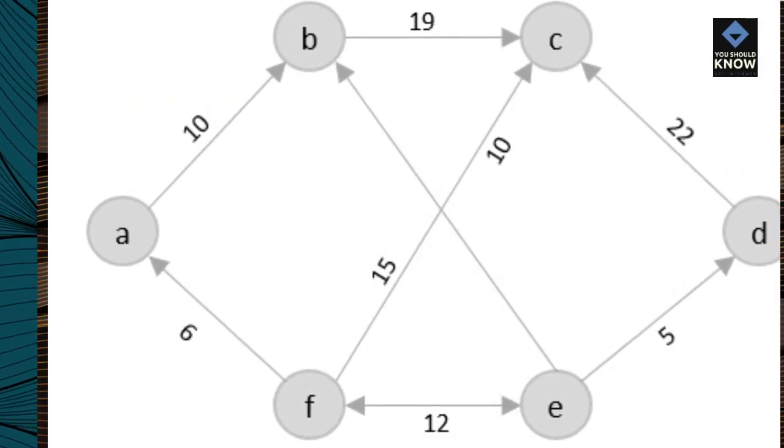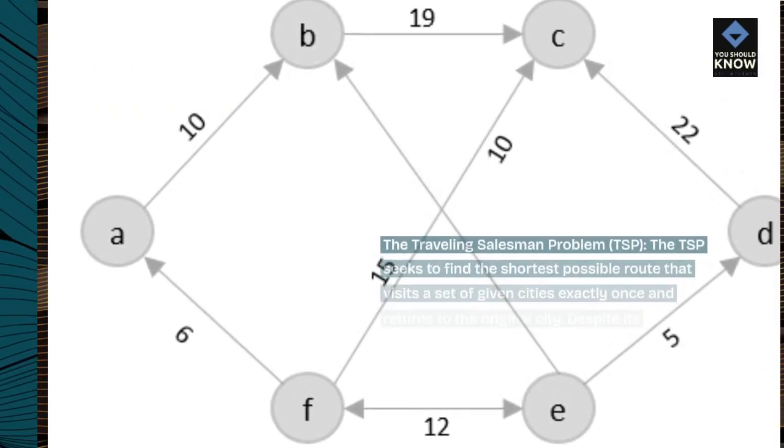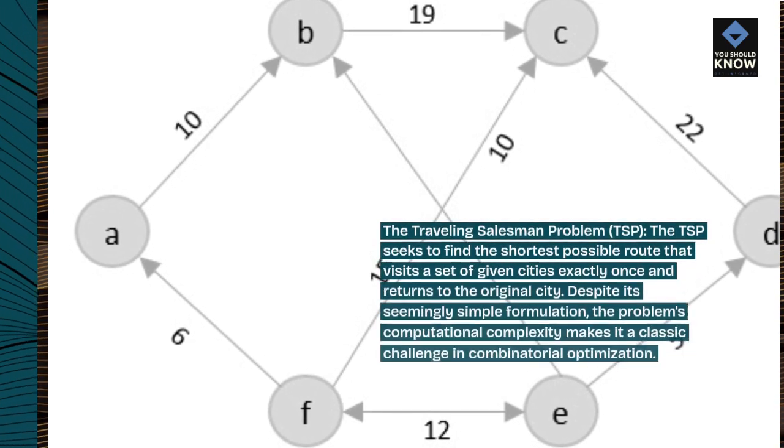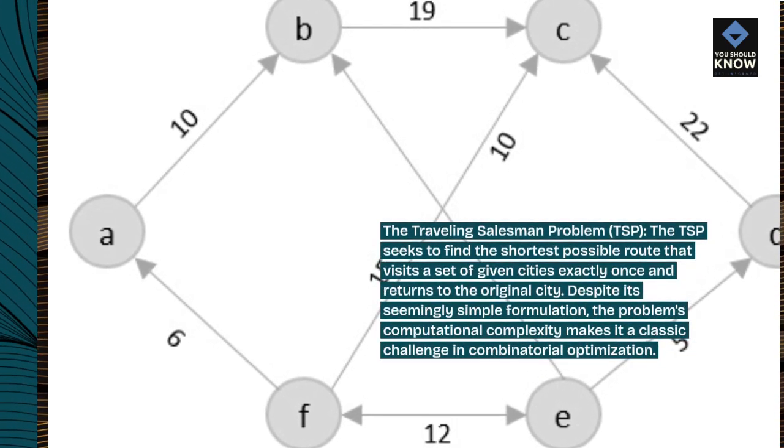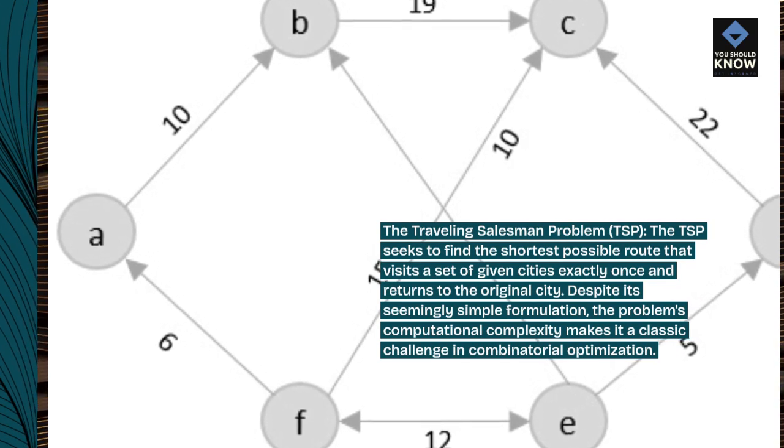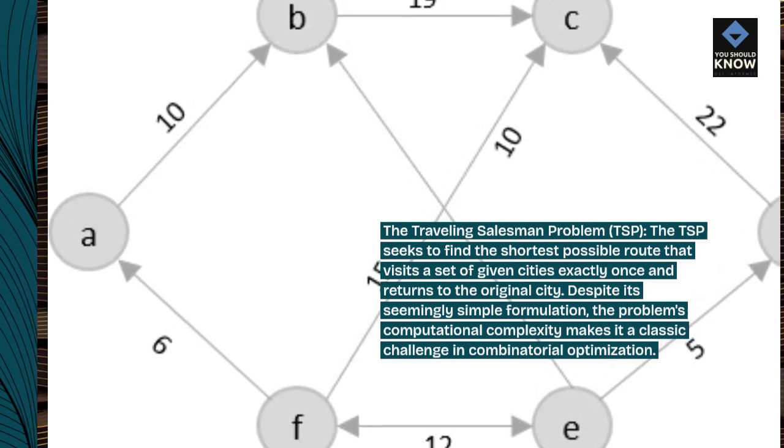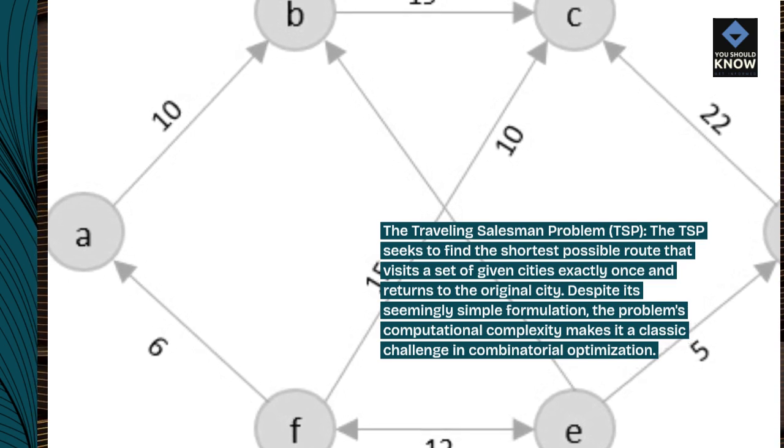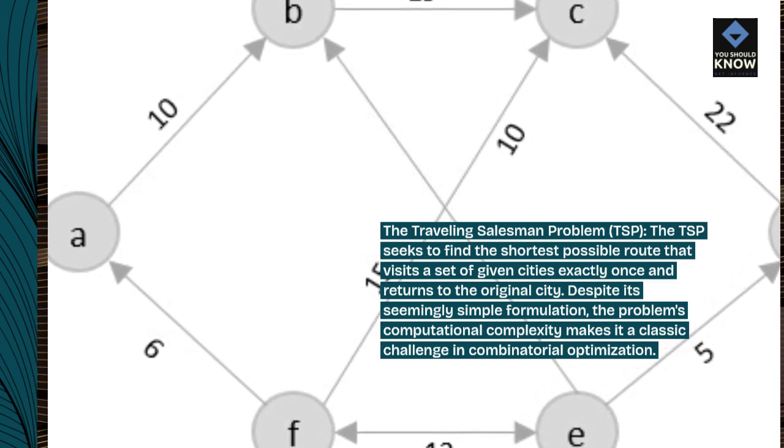The Traveling Salesman Problem (TSP): The TSP seeks to find the shortest possible route that visits a set of given cities exactly once and returns to the original city. Despite its seemingly simple formulation, the problem's computational complexity makes it a classic challenge in combinatorial optimization.